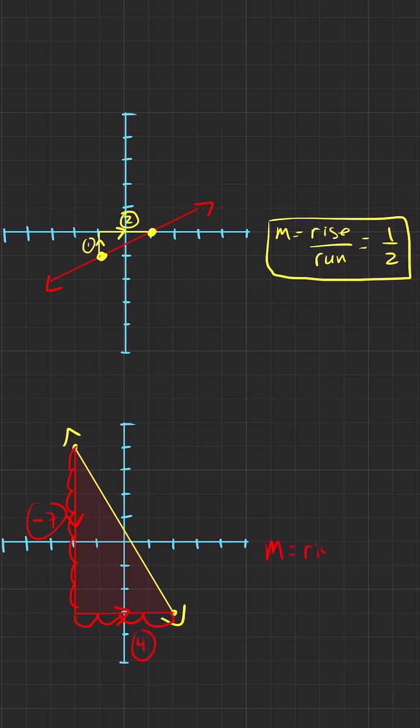And again, since slope is rise over run, when you read the graph from left to right, this is negative seven rise over positive four run. And that way you will never mix up your rise and your runs and your positives and your negatives.